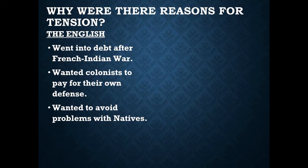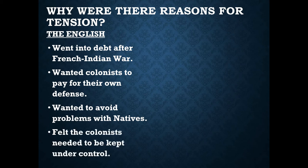The British also wanted to avoid problems with the natives. After winning the French and Indian War, the British knew the natives were upset because they had sided with the French — the French lost, and therefore most of the natives lost, leaving some raw feelings. The British wanted to let those raw feelings simmer down before settlers started moving west across the mountains from the original 13 colonies. The British also felt the colonists needed to be kept under control. As the colonies asserted more independence, the British became uncomfortable and tried to control them more — there's a tension there, and it doesn't always end well.